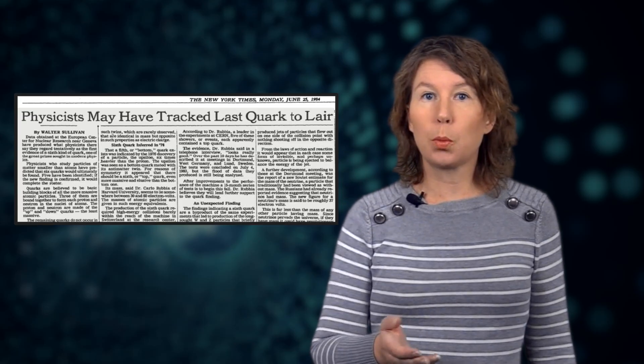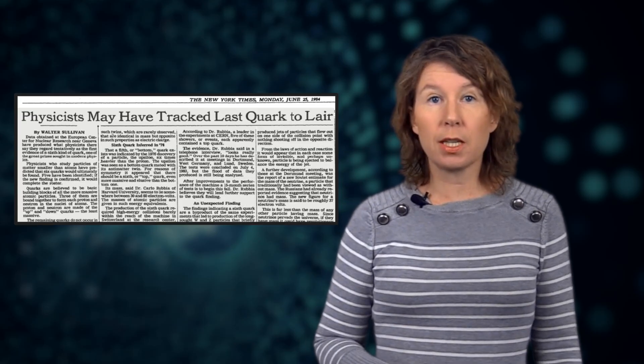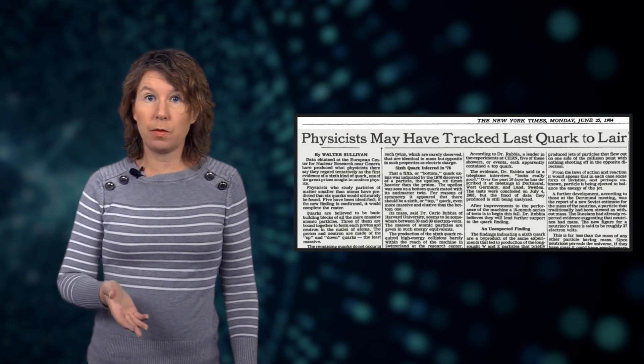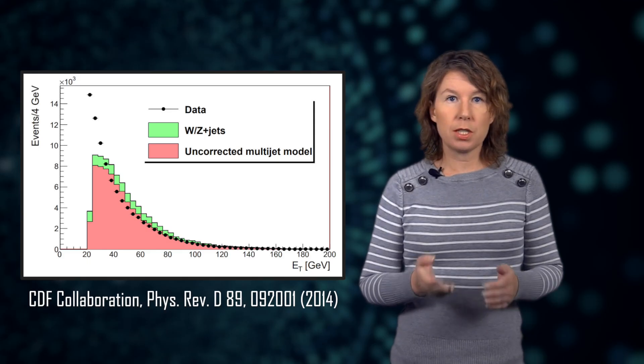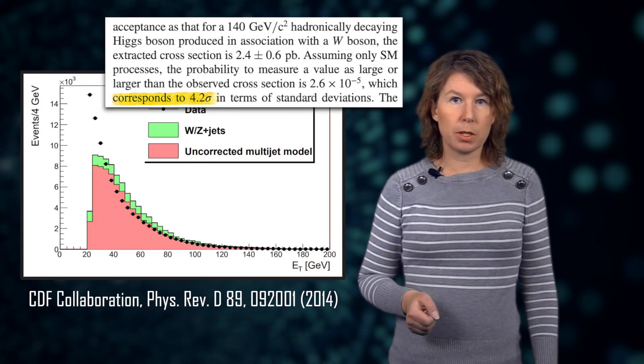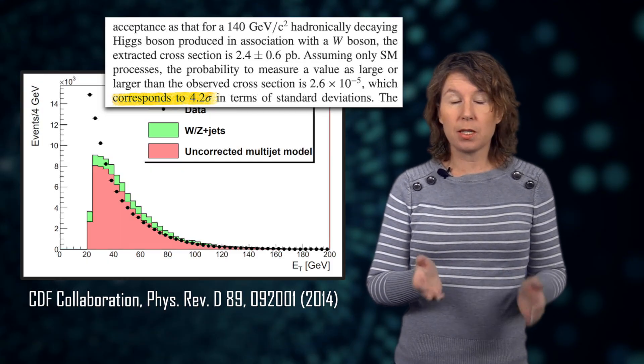The muon g-minus-2 anomaly recently increased from 3.7 to 4.2 sigma, but it hasn't crossed the discovery threshold. Not all discoveries that disappeared were due to fluctuations. For example, in 1984 the UA1 experiment at CERN saw eleven particle decays of a certain type when they expected only 3.5 — the signature fit the expected top quark. The physicists were quite optimistic and it made the New York Times, but it turned out they had misestimated the expected number of events. The top quark wasn't actually discovered until 1995. A similar thing happened in 2011 when the CDF collaboration at Fermilab saw an excess at about four sigma — not fluctuations, but requiring better understanding of the background.